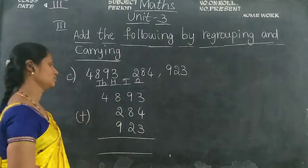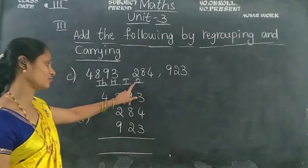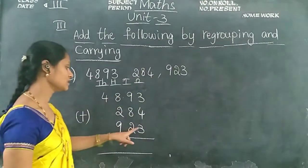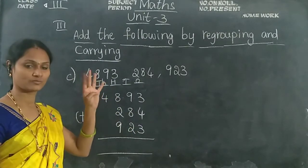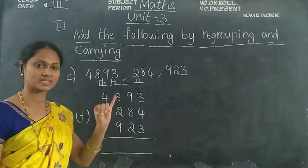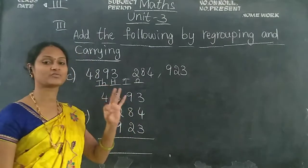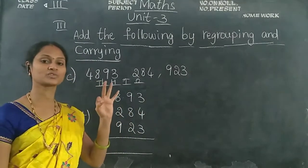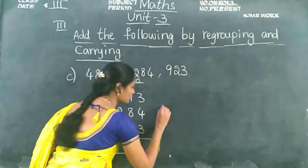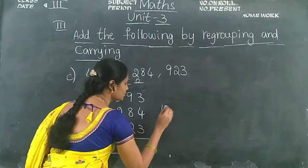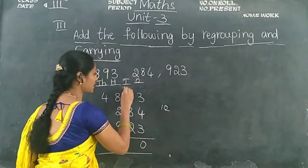Now we add the ones place. Keep 3 in your mind, take 4 fingers: 3 after 4, 5, 6, 7. Keep 7 in your mind, take 3 fingers: 7 after 8, 9, 10. So 10 is a 2-digit number — write 0 in the ones place and carry 1 forward to the tens place.